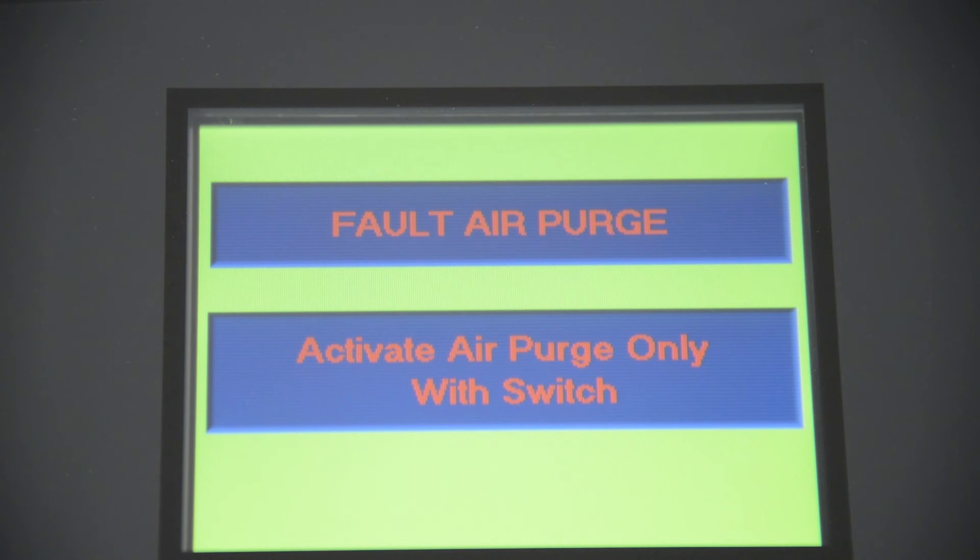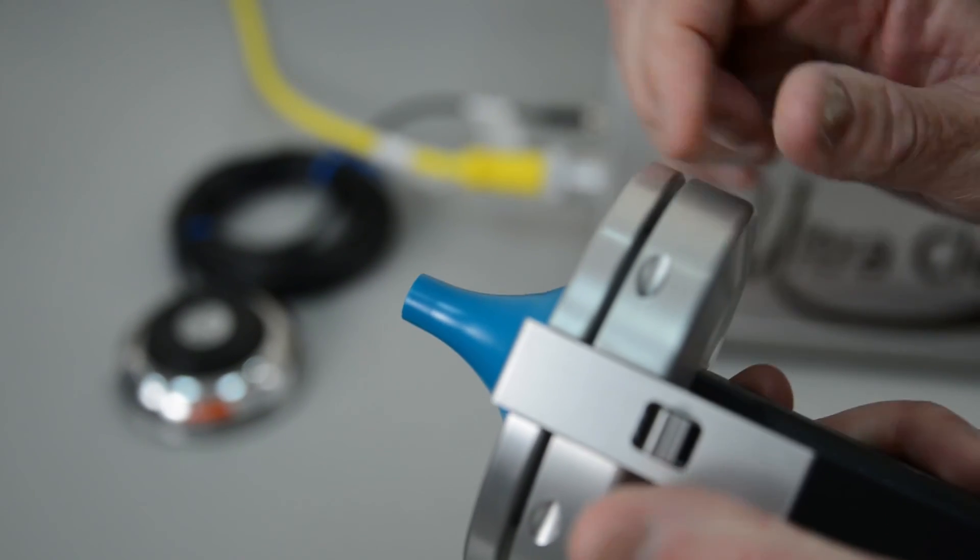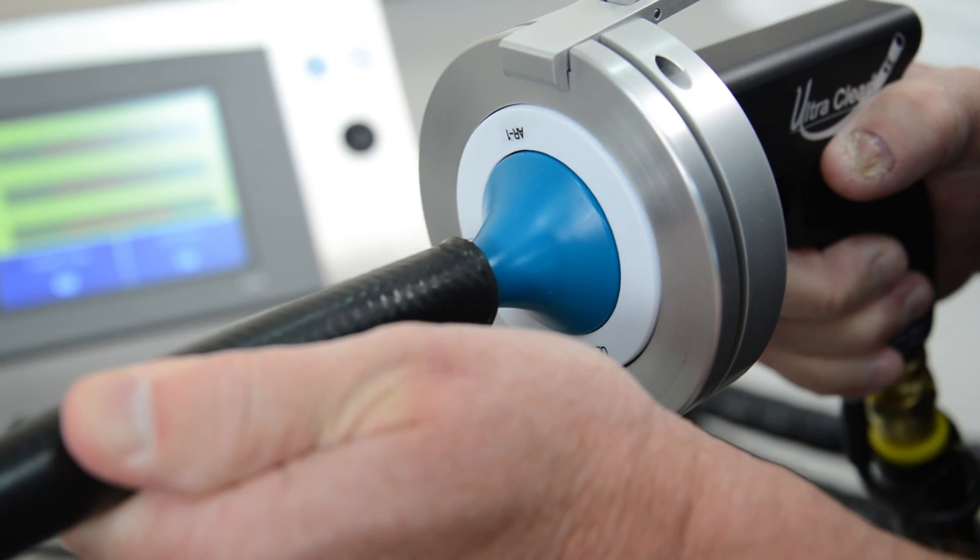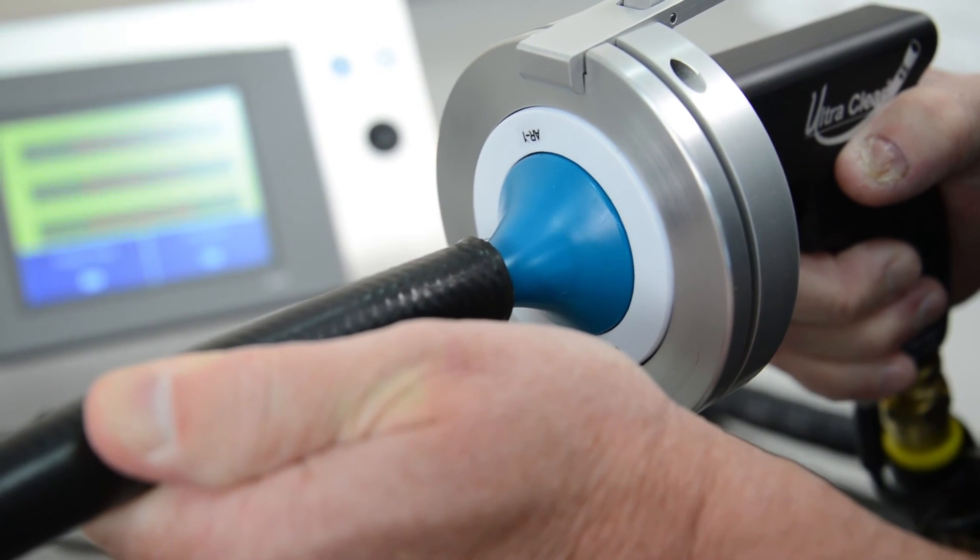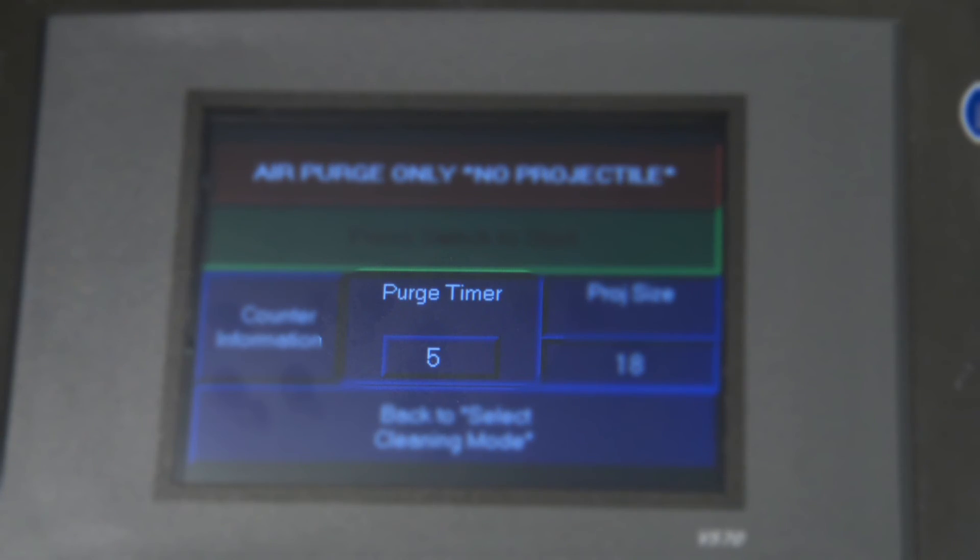The system will now prompt the operator to activate an Air Purge. This is to ensure that a projectile is not stuck in the hose or tube. Do not put a projectile into the launcher during the Air Purge procedure. Hold the hose tightly against the nozzle and depress the trigger to activate the Air Purge. We recommend that the Air Purge last for no less than three seconds.